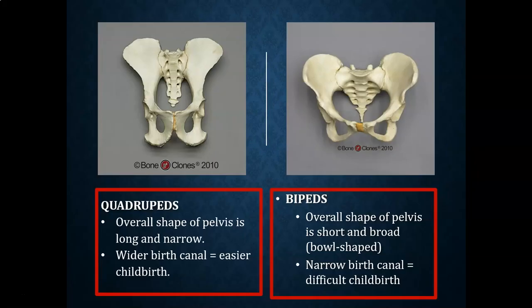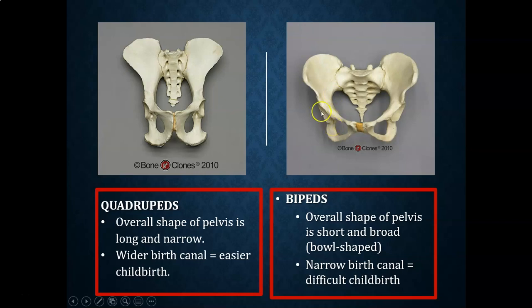The pelvis is another key feature for determining if we're looking at a quadruped or a bipedal hominin. Quadrupeds are going to have an overall pelvis shape that is more long and narrow, and the birth canal for a quadruped, like a chimpanzee, is going to be much wider — so for a chimpanzee, birth is not as dangerous or complicated as with a modern human. In a biped, the overall shape of the pelvis is short and broad — sometimes called bowl shaped — with the iliac blades curving in, and the birth canal, the pelvic inlet, is relatively narrow, which is one of those evolutionary trade-offs of bipedal locomotion.